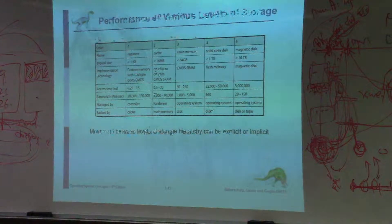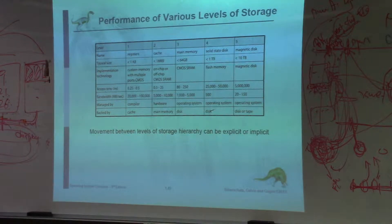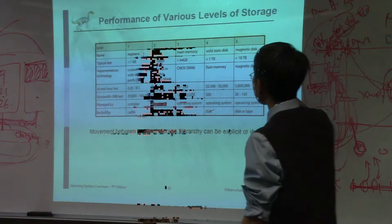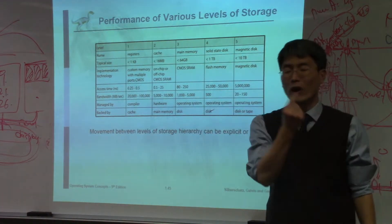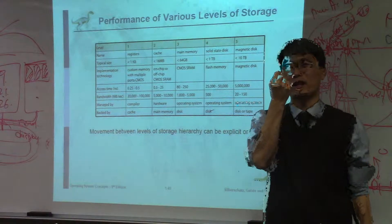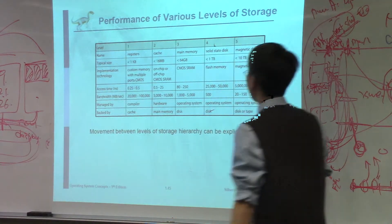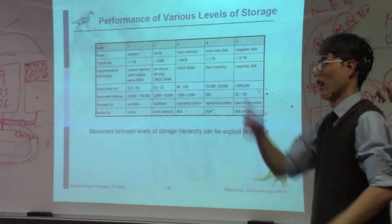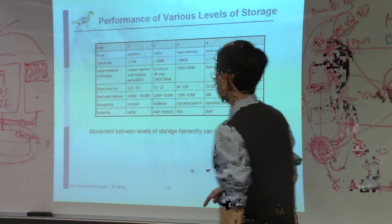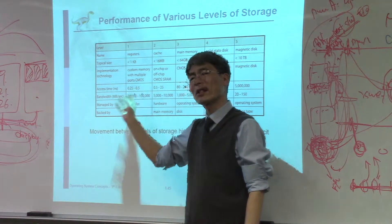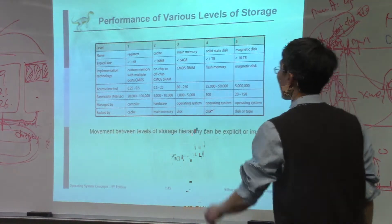This slide shows the difference in performance across various storage types. There are three levels. From registers — as I said — all the way to magnetic tape. The typical size of a register is very small: one register like AX or BX is 16 to 64 bits. But a magnetic tape can be as large as possible — as much as you can roll. However, the access time for registers is in nanoseconds, so you need only a few nanoseconds to access data in memory or wherever.